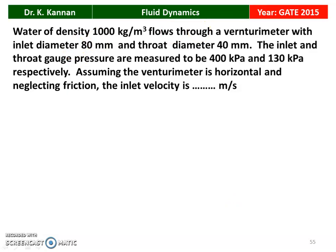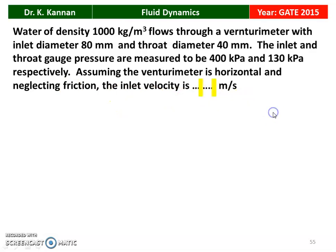The next question from the 2015 question paper: water of density 1000 kg/m³ flows through a venturimeter with inlet diameter 80 mm and throat diameter 40 mm. The inlet and throat gauge pressures are measured to be 400 kilo Pascal and 130 kilo Pascal respectively. Assuming the venturimeter is horizontal and neglecting friction, the inlet velocity is 6 meters per second. We will see how in the next slide.